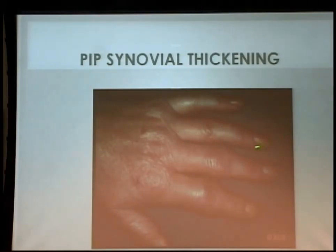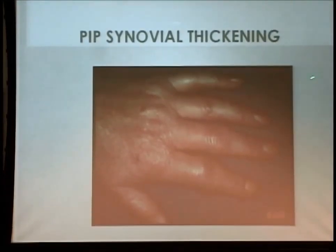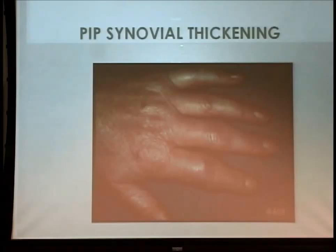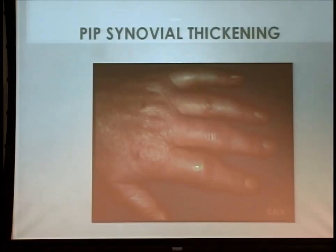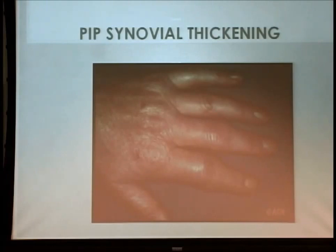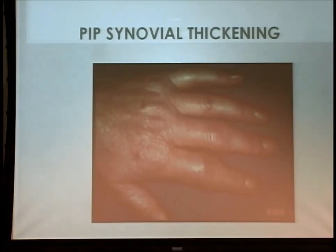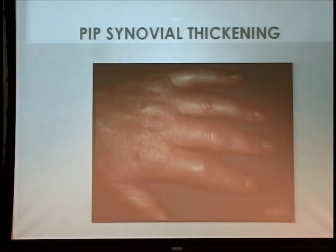Looking at an image of a rheumatoid hand showing PIP synovial thickening: you can see swelling and fullness across multiple joints — this person has about eight joints involved. Without touching them you can't confirm warmth or boggy synovium, but this is a reasonably common picture for inflammatory arthritis. This picture can be seen in lupus, Sjogren's, ankylosing spondylitis, and Lyme disease, but is definitely typical of rheumatoid arthritis.